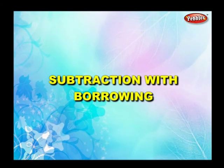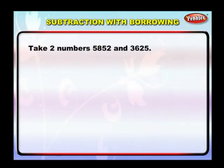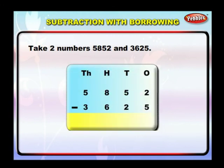Subtraction with borrowing. In the given two numbers, when the digit to be subtracted is bigger than the corresponding digit, we borrow one from the previous digit in the first number. I will explain this with an example. Take two numbers: 5852 and 3625. Arrange them in a column.